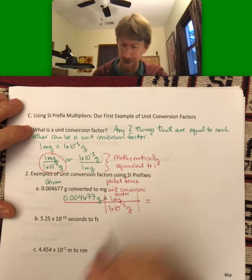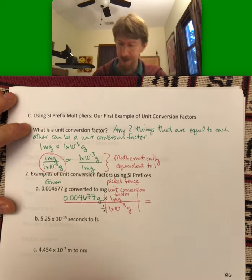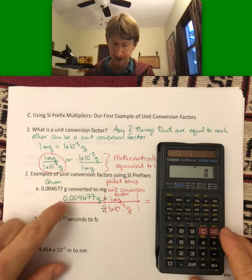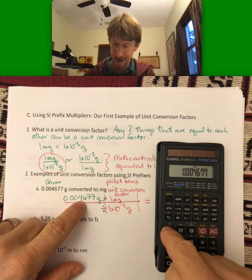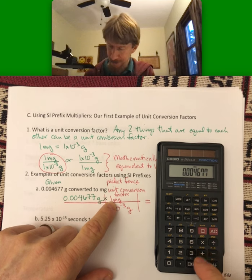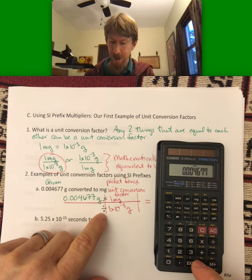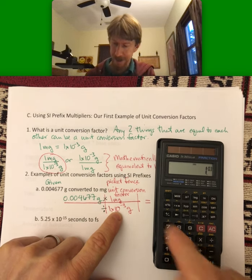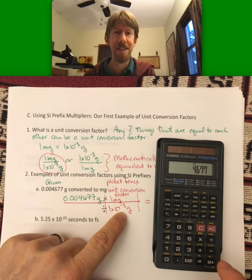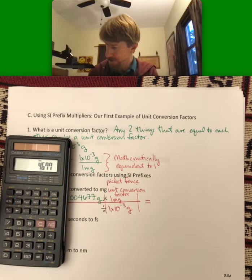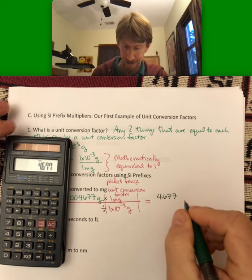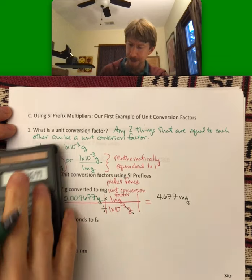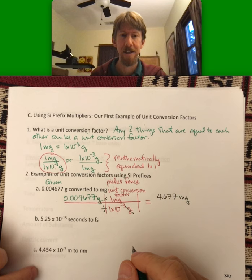Then I can go ahead and work my problem. Mathematically, you take and multiply all the numbers on the top and divide by all the numbers on the bottom. Let's do this on the calculator: 0.004677 times 1, doesn't matter if you do it, but we can do it times 1, you get the same number, divided by the number on the bottom, 1. So divide 1 exponent 3 minus, got that in there, equals. I get 4.677 as my number. My units cancel, and I'm left with the units of milligrams.